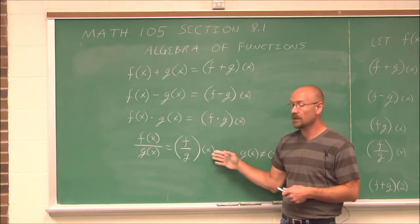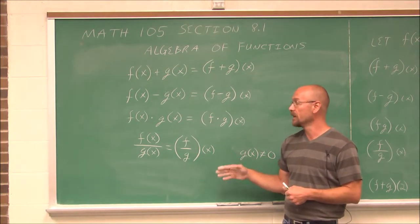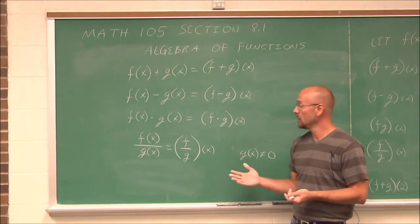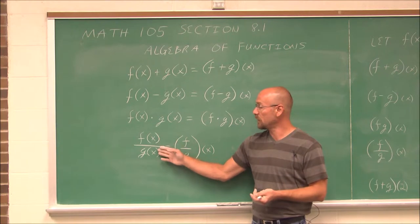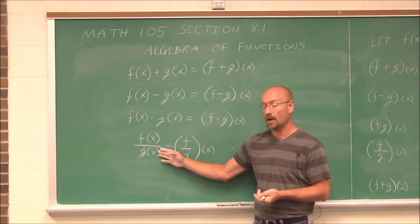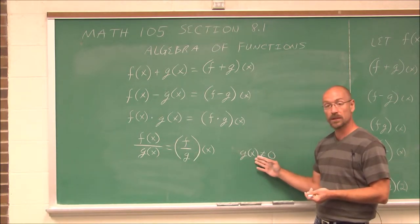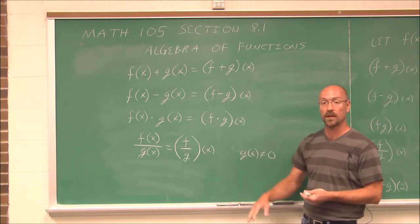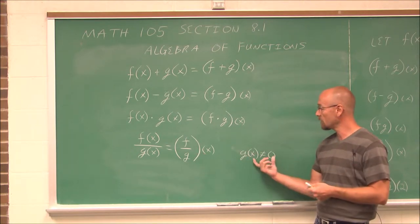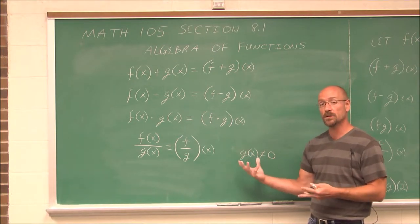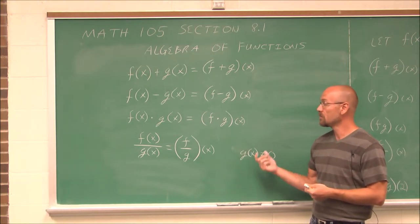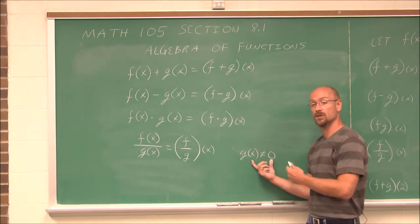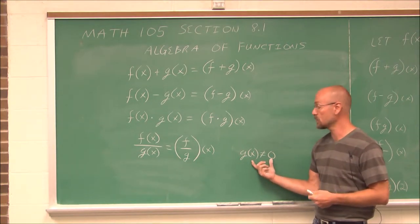One thing we always have to be aware of is domain restrictions. We never want to divide by zero. So if we have two functions and we're going to divide by one of them, the function in the denominator can never equal zero, because that would be undefined. So when we have division, our functions may have restrictions, and we may find additional restrictions.